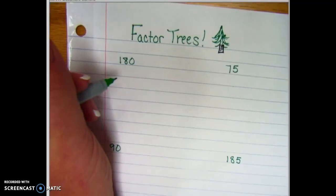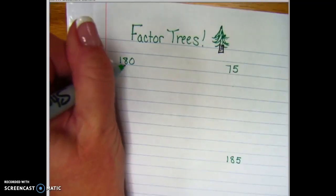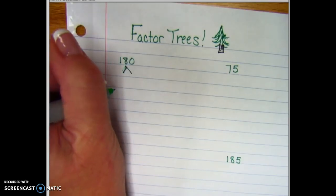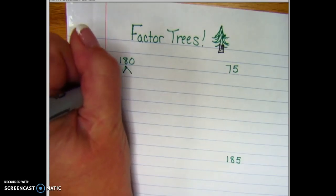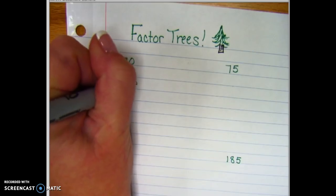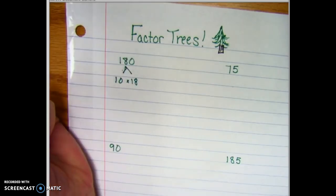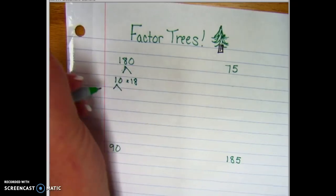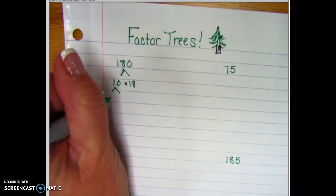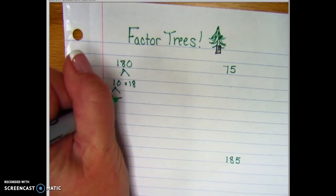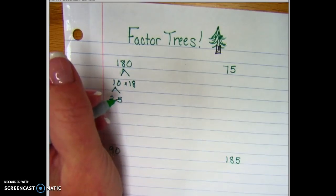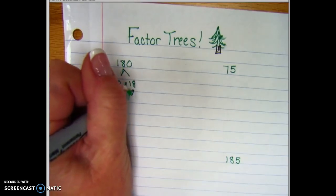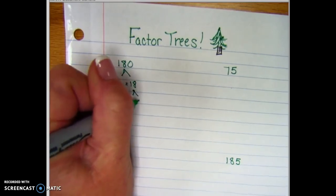So let's take 180 and we're going to branch out from the 180. I am simply going to write that it is 10 times 18. We're going to break that further into pieces and create a new branch. We're going to do 10 is 2 times 5, and then 18 we are going to break apart as 2 and 9.